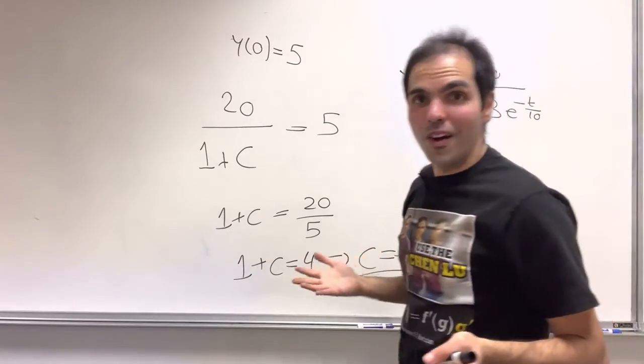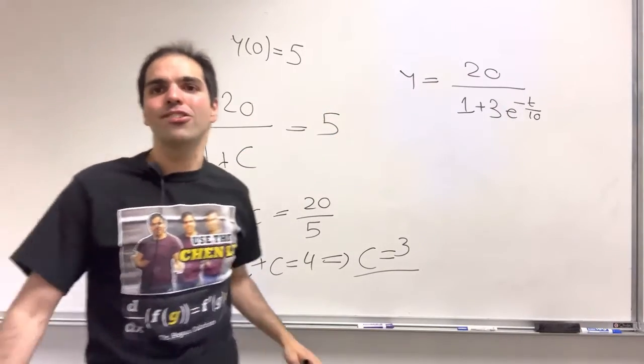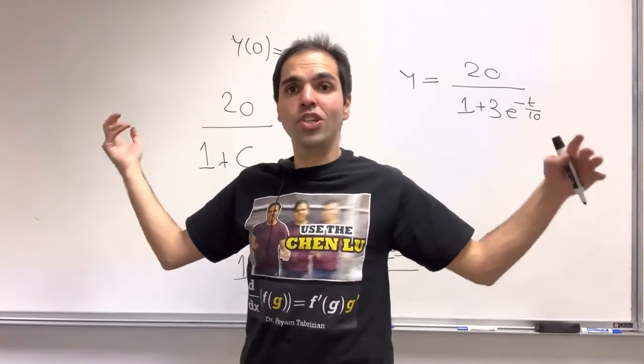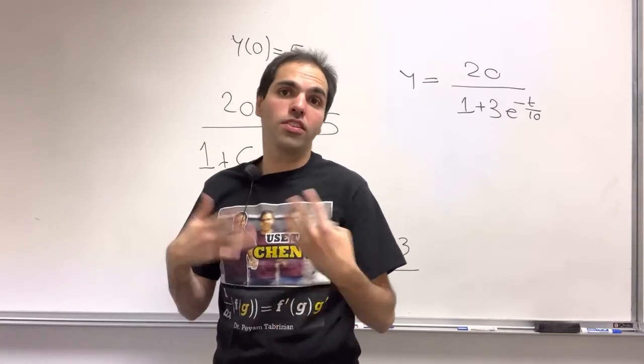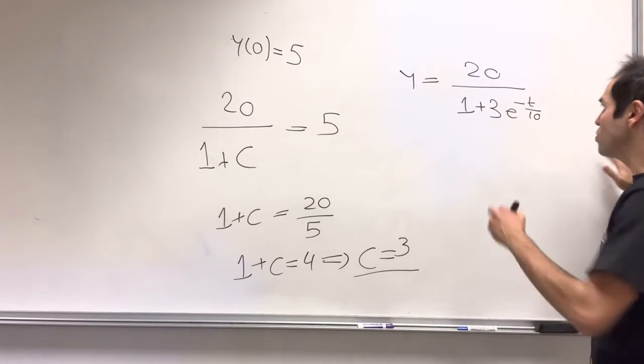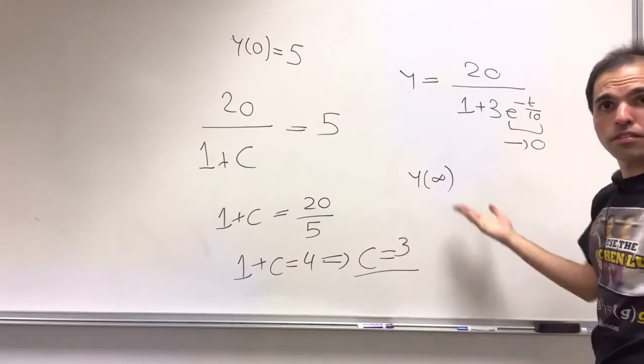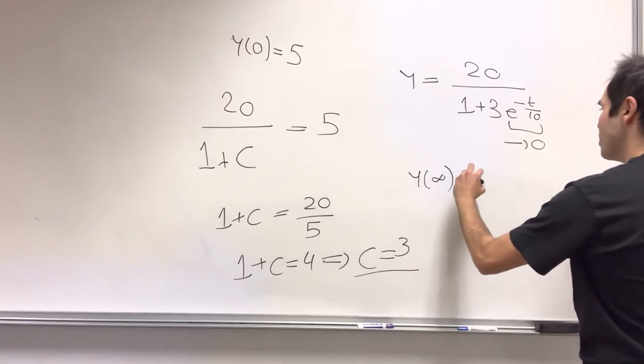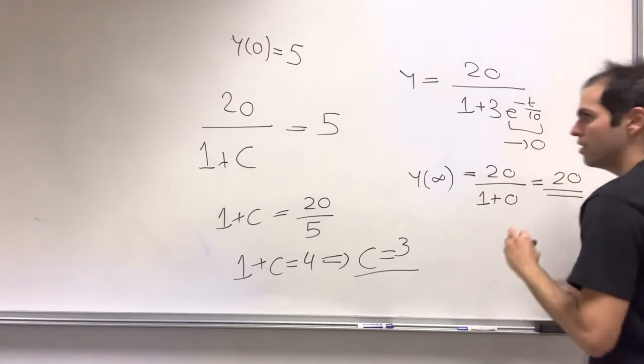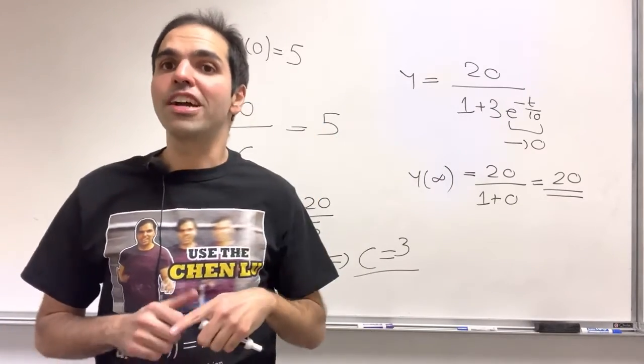Yes, and then one more remark. So, again, what this is supposed to model is the population of bunnies. But more realistically, because bunnies don't multiply exponentially, they are limited by resources, such as limited amount of food. And, in fact, the cool thing is, if you let t go to infinity, then this goes to 0. And, in fact, the limit as t goes to infinity of our solution, because 20 over 1 plus 0, which is 20, which is precisely that number 20 that arose in the equation at the very beginning.